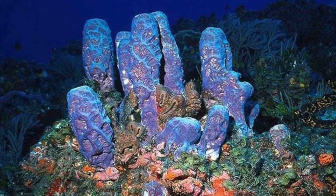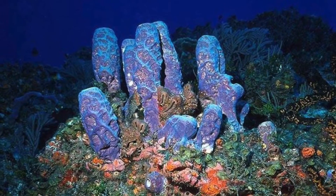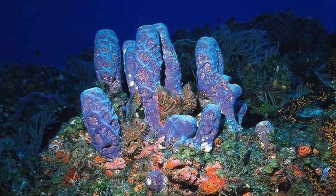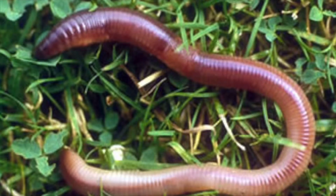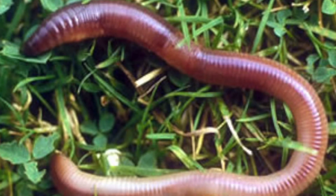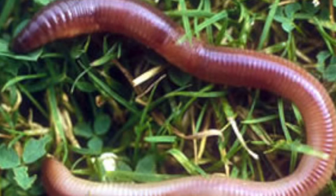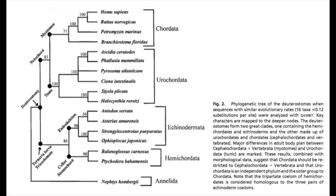In addition, in the data matrix tree the outgroup is Porifera, whereas in the 18S tree the outgroup is Annelida. Also, the fact that the 18S tree focuses on deuterostomes — except for the outgroup — creates a more specified tree and rules out any relations between hemichordata and the protostomes that we dissected in class.